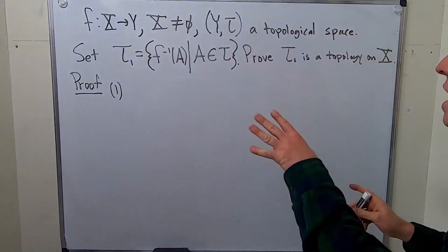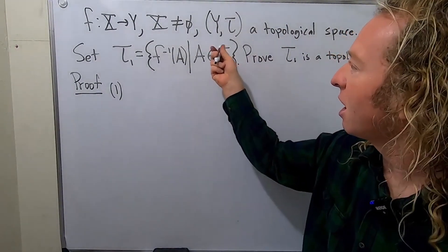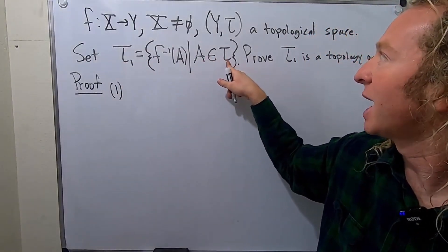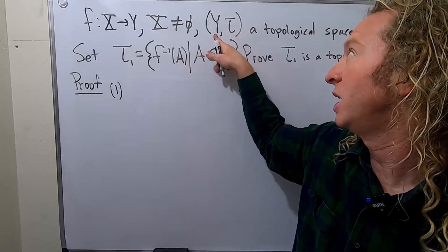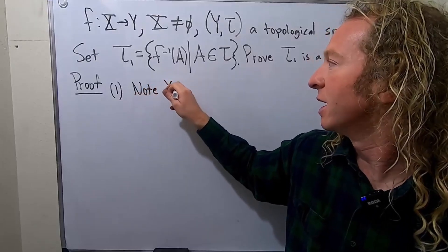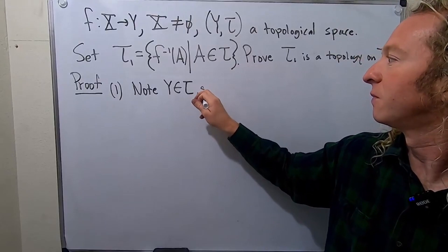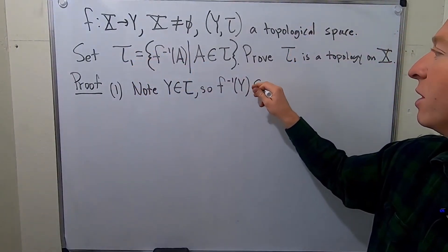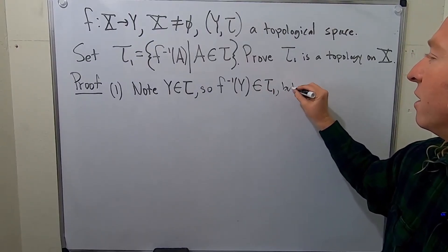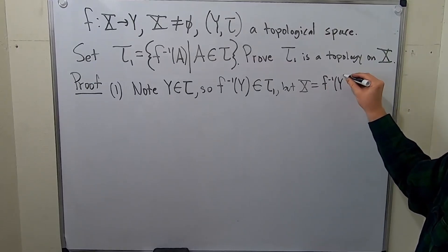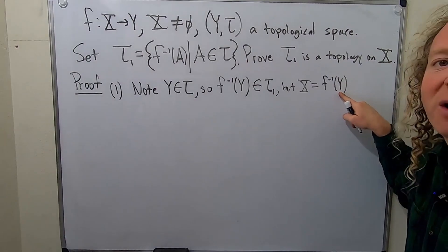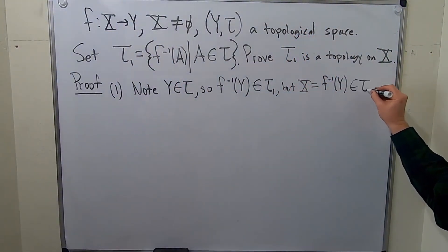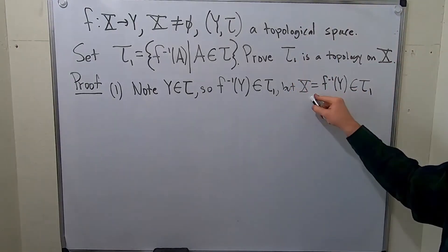Condition 1: tau 1 contains the entire space X and the empty set. Note that Y is an element of tau, because tau is a topology on Y, so it contains the whole space. That means f inverse of Y is in tau 1 by definition. But f inverse of Y is equal to capital X, since every element of X gets sent to Y. So capital X is in tau sub 1.